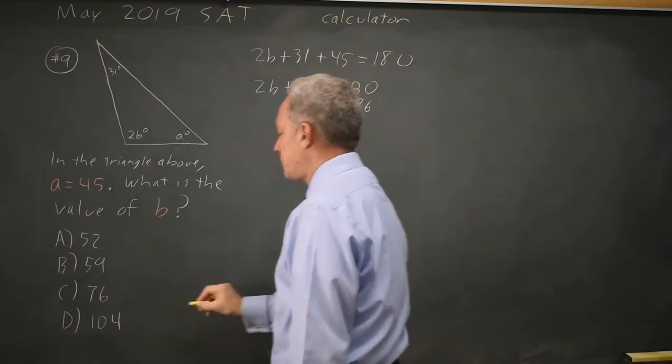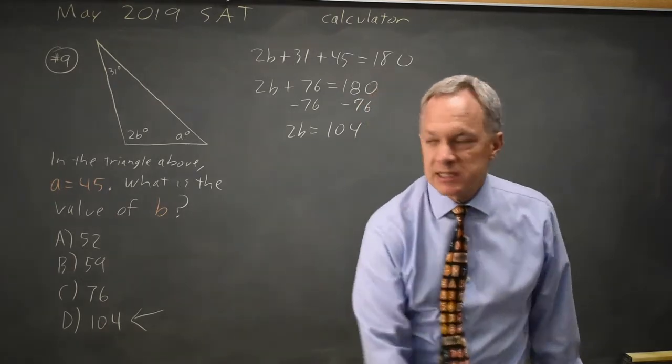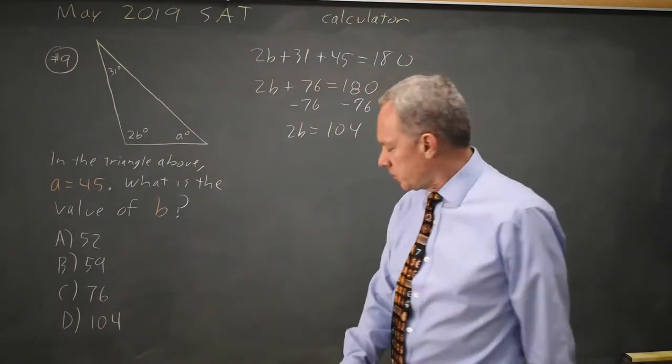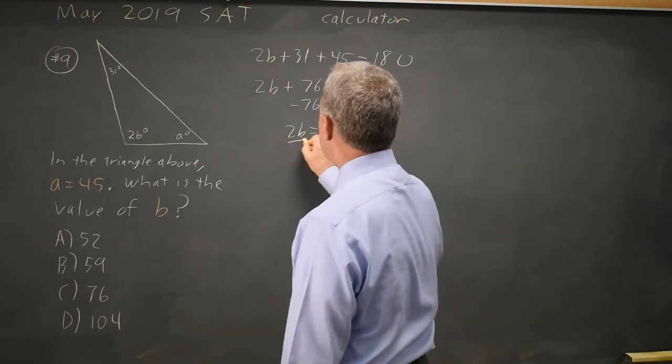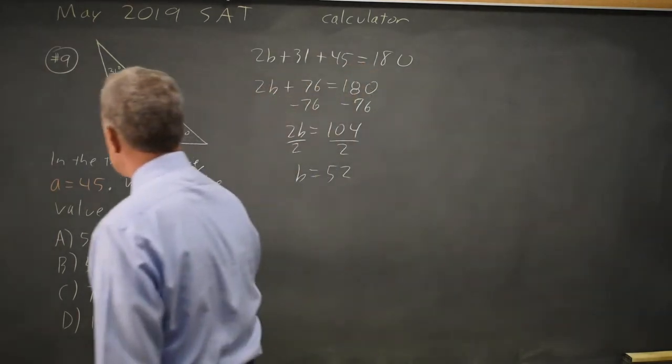We're tempted to mark 104 because we found the third angle, but they are not asking for the third angle. They're asking for B where the third angle is 2B. So I'm going to divide both sides by 2. B equals 52, which is choice A.